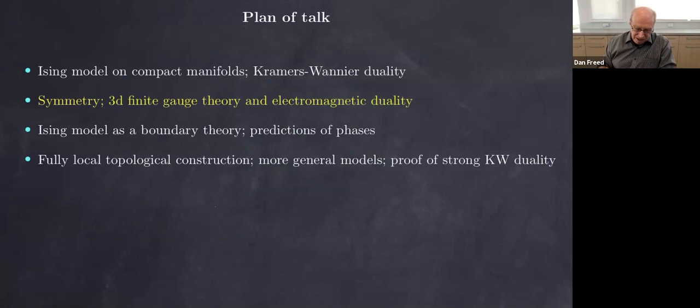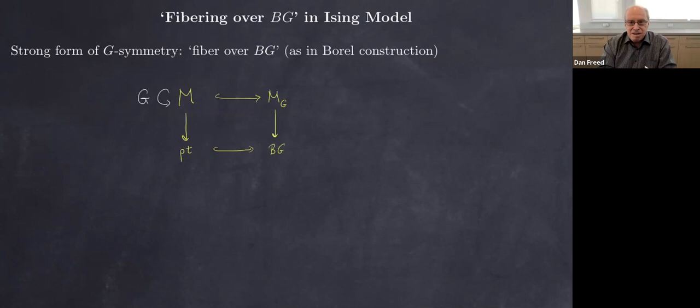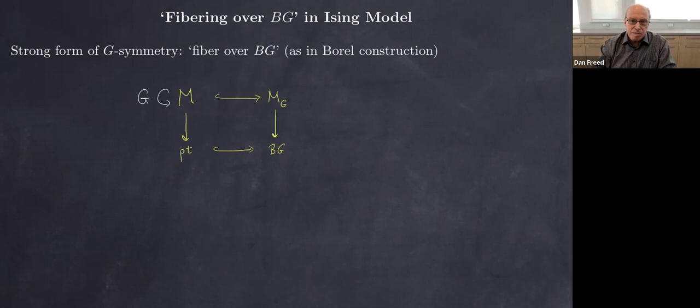In topology this is called the Borel construction: if you have a topological space with a group acting on it, you make the Borel quotient, which fibers over BG. We're going to use a more rigid version. A model for BG for a finite group G: think of BG as principal G-bundles. A principal G-bundle is a covering space — a Galois regular covering space where the group of deck transformations is G. These principal G-bundles have automorphisms, so we get a groupoid rather than a set.